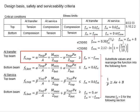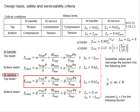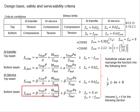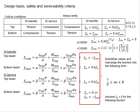At the transfer, the top beam is limited by the tension limit. The bottom beam is controlled by its compression limit. As for the service, the top fiber of the beam is controlled by its compression limit, and the bottom beam is controlled by its tension limits, as listed here.